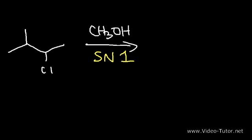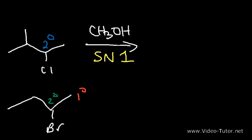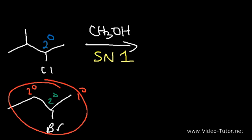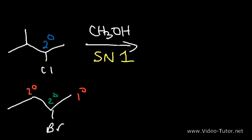In the last example, the bromine atom was attached to a secondary carbon. Looking at the carbon atoms adjacent to it, it has a primary carbon on the right side and a secondary carbon on the left. Because there's no carbon atom that's more substituted than the secondary one, that substrate will not allow rearrangements to occur — so all we had to do was replace the bromine atom with an OH group.